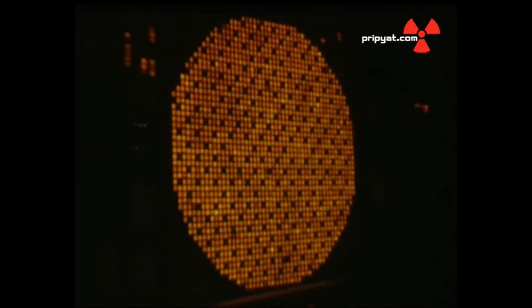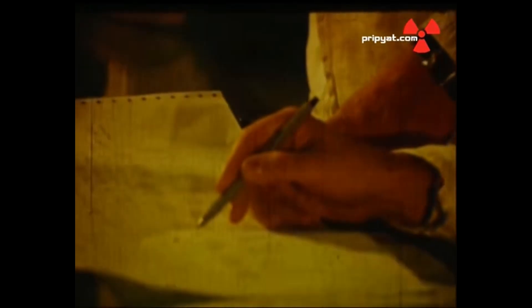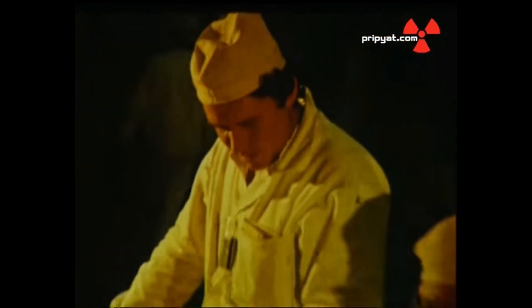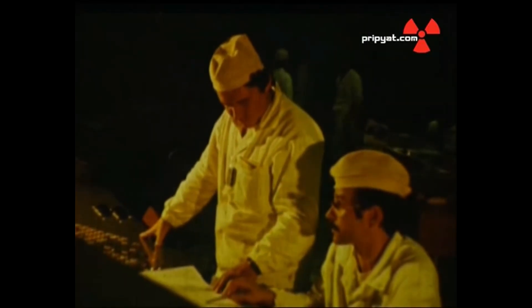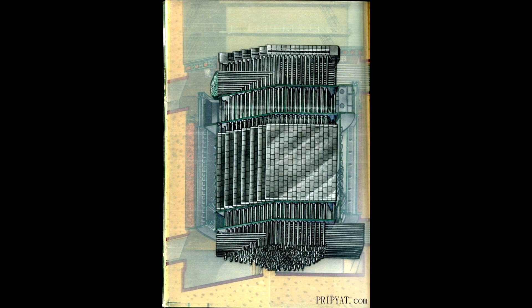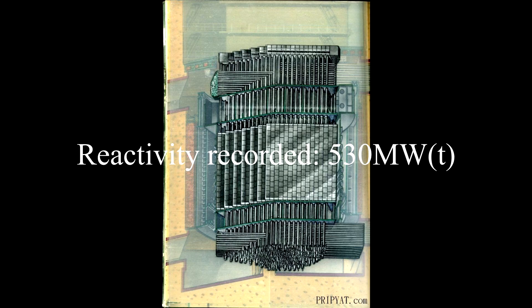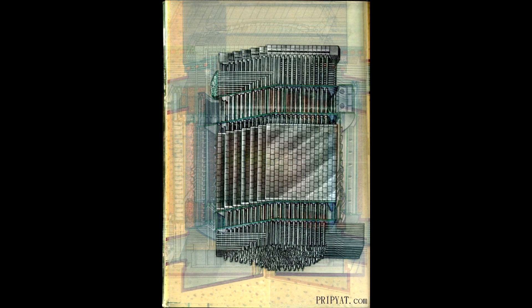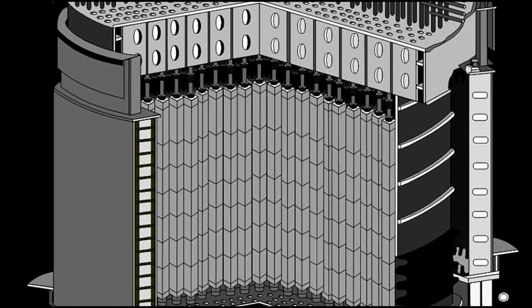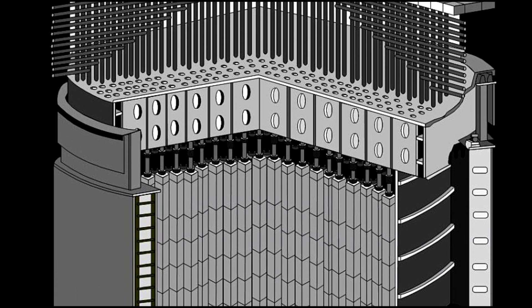This surge in power caused a further expansion of gases released by the byproducts of the fission reaction, and the boiling coolant water is actively forcing water out of the core, only accelerating the fission even more. The increase in power is now so rapid that the measuring devices cannot keep up. The reactivity recorded by computers is just 530 megawatts and accelerating. However, the real value was likely closer to 3,800 megawatts of thermal energy, and it is at this point that the reactor's first peak of reactivity is unleashed.